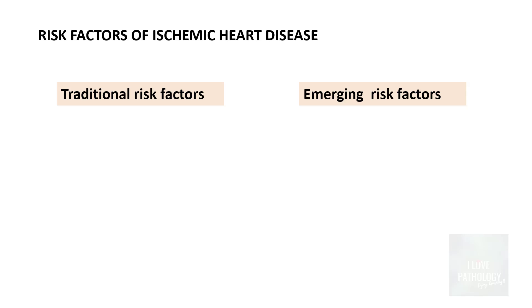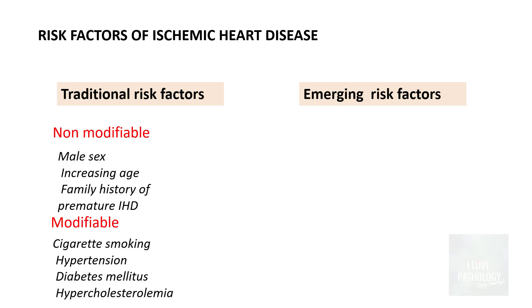Moving on to understanding the various risk factors associated with ischemic heart disease, they are broadly categorized into traditional risk factors and emerging risk factors. The traditional risk factors are further categorized into modifiable and non-modifiable. The non-modifiable risk factors are the ones which we don't have any control over, for example male sex, increasing age, and family history of premature ischemic heart disease.